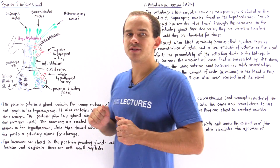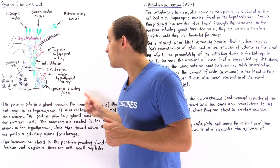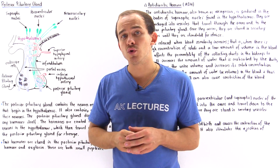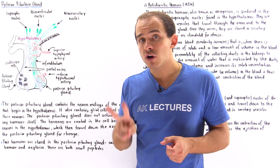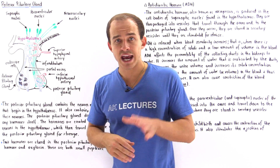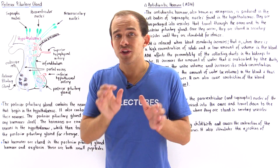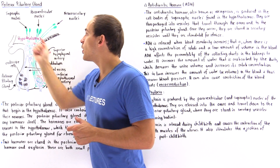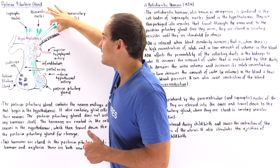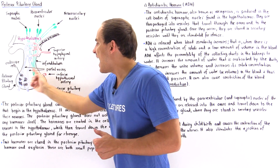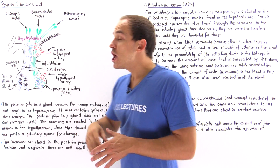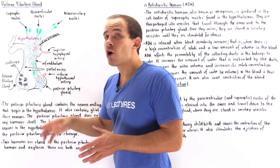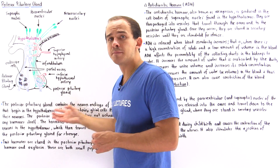The posterior pituitary gland does not actually produce any hormone of its own. The two hormones used by the posterior pituitary are both synthesized in the cell bodies of the neurons found in the hypothalamus. These neurons have axons that begin in the hypothalamus and extend all the way to the posterior pituitary gland. Once synthesized, the hormones travel through the axon and are stored inside the posterior pituitary gland.